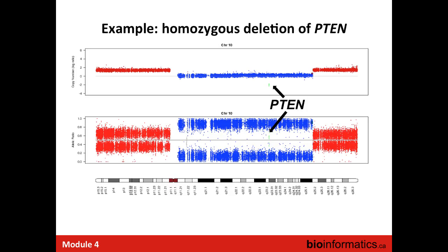On the other end of the spectrum, we have homozygous deletions like PTEN—a complete absence of copies over the PTEN region. It's focal, which is very classic for a tumor suppressor. We see that it's in an area of copy-neutral LOH.